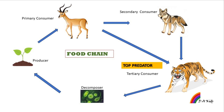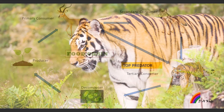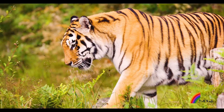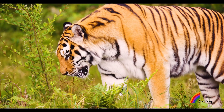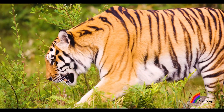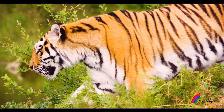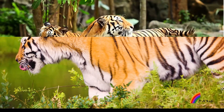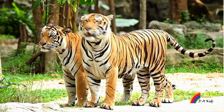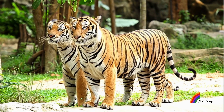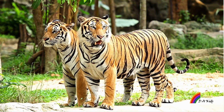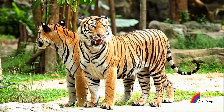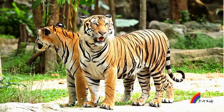The tiger is a top predator, at the apex of the food chain, and keeps the population of wild ungulates — primarily large mammals — in check. The tiger helps in maintaining the balance between prey herbivores and the vegetation upon which they feed. Even though tigers are popular animals enjoyed across the world, they are endangered — in danger of disappearing from the wild. This is mainly because of poachers who hunt tigers for their body parts, and habitat loss when people use the tiger's land.